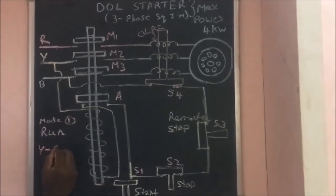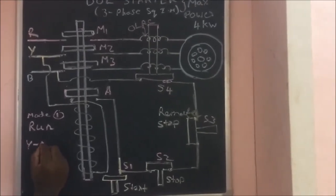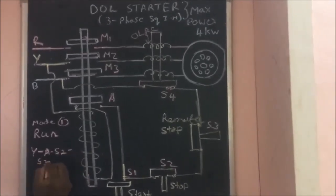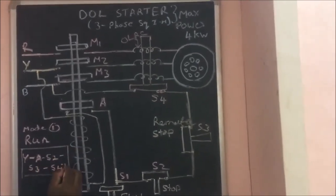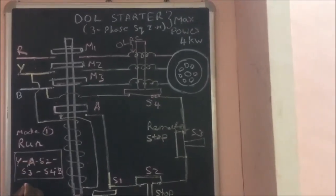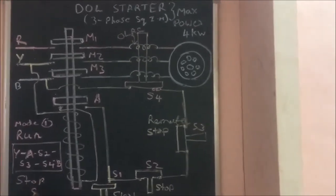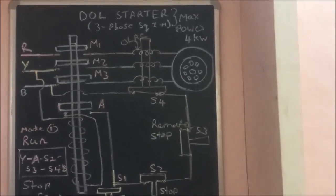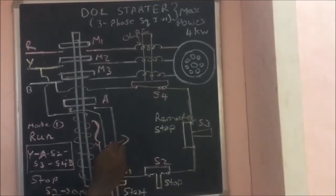In the direct online starter, starting takes place as follows. S1 is the starting or push button — it is the green button. When you push the button, it will close and make contact, and current will flow through R-phase, S1, S2, S3, S4, and finish in B-phase. The under-voltage release coil will become magnetized.